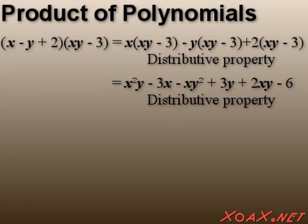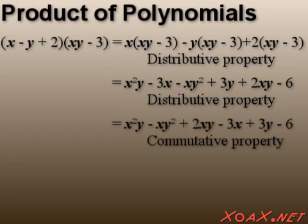Typically, we will write the highest degree terms first. In this case, we rearrange the terms via commutativity to get x²y-xy²+2xy-3x+3y-6.